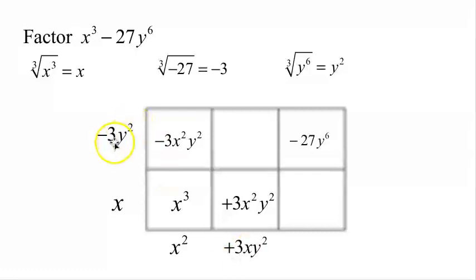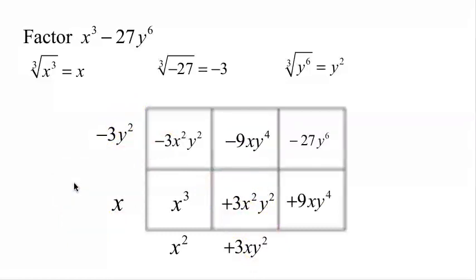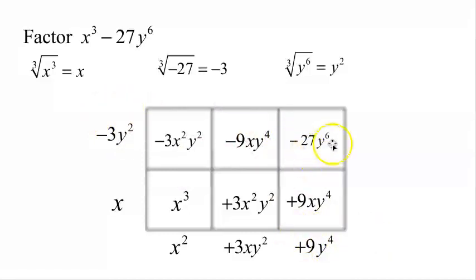Negative 3y squared times x squared gives negative 3x squared y squared — I need that to cancel, so I add positive 3x squared y squared. To get positive 3x squared y squared by multiplying by x, I need 3xy squared down here. Multiplying 3xy squared by negative 3y squared: 3 times negative 3 is negative 9, times x, times y to the 4th. Add positive 9xy to the 4th to cancel. What times x gives 9xy to the 4th? Positive 9y to the 4th. Check the last cell: 9 times negative 3 is negative 27, y to the 4th times y squared is y to the 6th. Correct. The answer is x minus 3y squared times x squared plus 3xy squared plus 9y to the 4th.